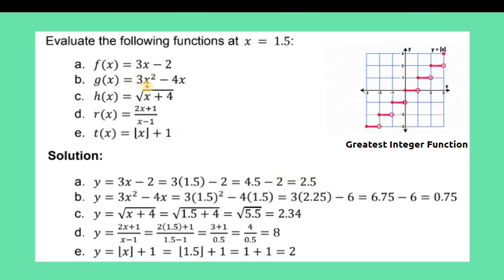Next, 3x squared minus 4x. You replace x with 1.5. What you do is 1.5 squared is 2.25, so you have 3 times 2.25 on the multiplication side, minus 4 times 1.5 which equals 6. Therefore, 3 times 2.25 equals 6.75 minus 6, and your answer is 0.75.